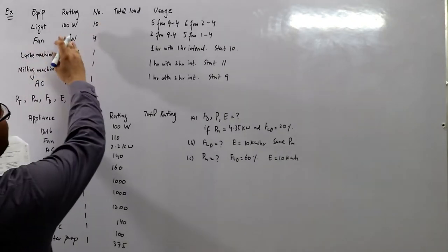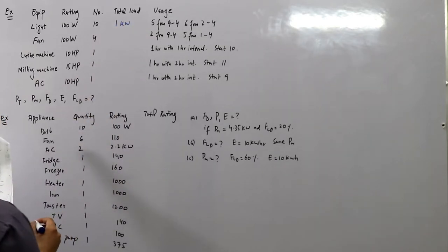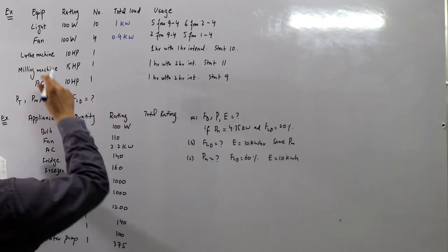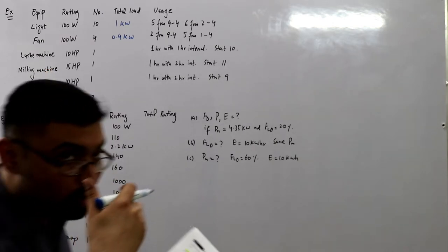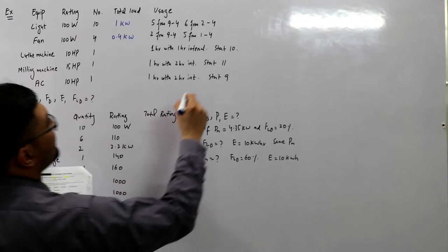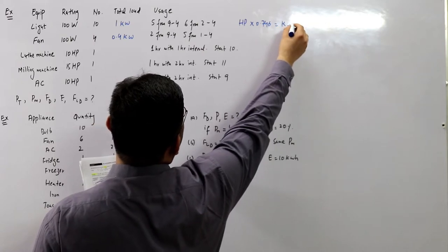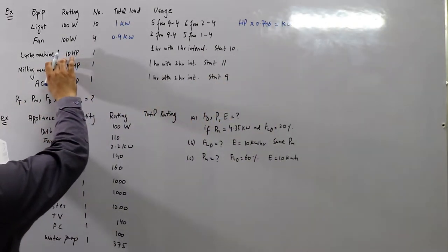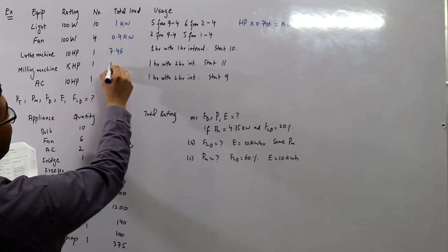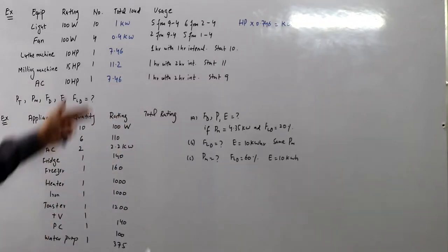You can find the total load of each: 10 multiplied by 100 would be 1000 watts, which is 1 kilowatt. Similarly, 4 multiplied by 100 would be 400 watts or 0.4 kilowatts. For the horsepower values, multiply by 0.746 to convert to kilowatts. So 10 × 0.746 = 7.46 kW, 15 × 0.746 = 11.2 kW, and 10 × 0.746 = 7.46 kW.